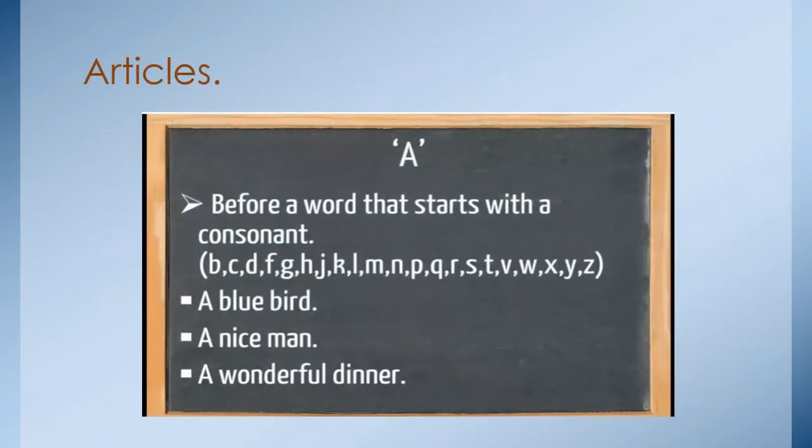Article A, before a word that starts with a consonant B, C, D, F, G, H, J, K, L, M, N, P, Q, R, S, T, V, W, X, Y, and Z, you have to use A. Example. A blue bird. Start with blue, start with B. A nice man. Nice start with N, so we use A. A wonderful dinner. We use A because wonderful starts with W.